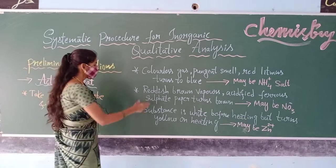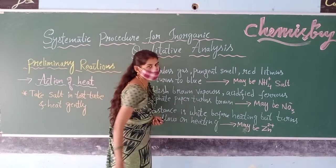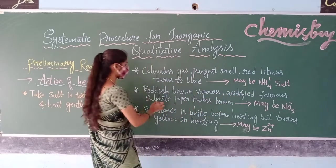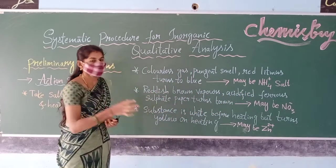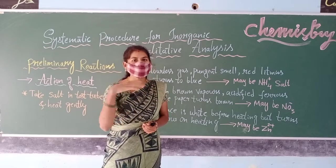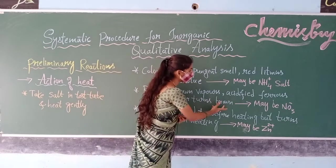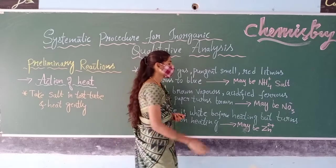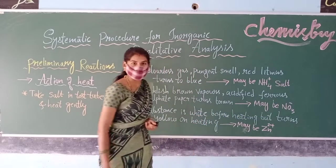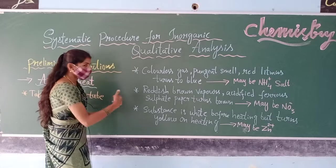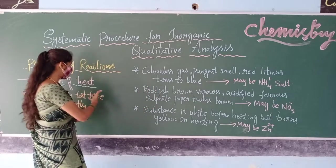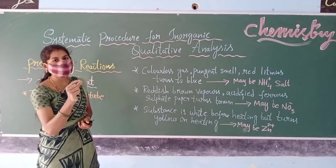The next condition: when we heat the salt, if reddish brown vapors are evolved, and we keep acidified ferrous sulfate paper at the mouth of the test tube and the paper turns brown, then we can confirm that the given salt is nitrite, NO3.